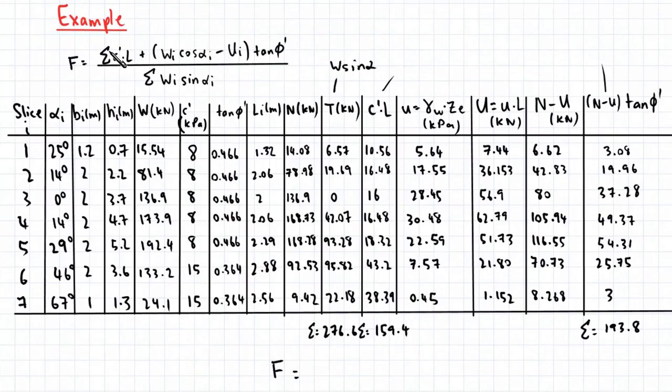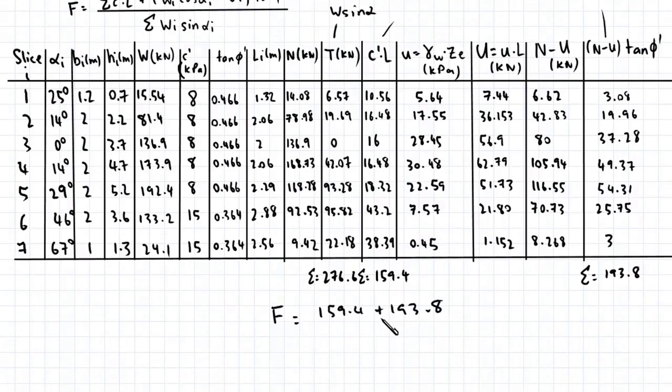So the factor of safety is equal to the sum of the resisting moments divided by the disturbing moments. So that's 159.4 plus 193.8 divided by 276.6. And this works out to be 1.26.